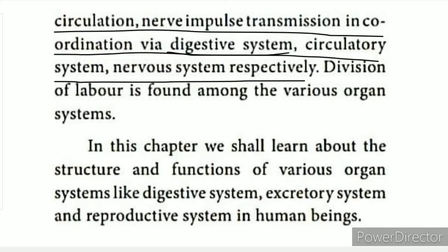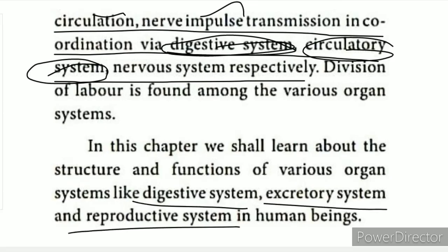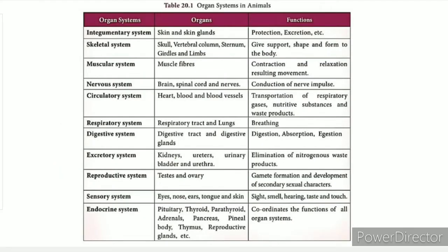Digestion is handled by the digestive system; blood circulation by the circulatory system; and the nervous system handles nerve conduction. The excretory system involves the skin and skin glands, along with organs such as the kidneys, with processes including excretion and sweating. The respiratory system is also a key organ system.